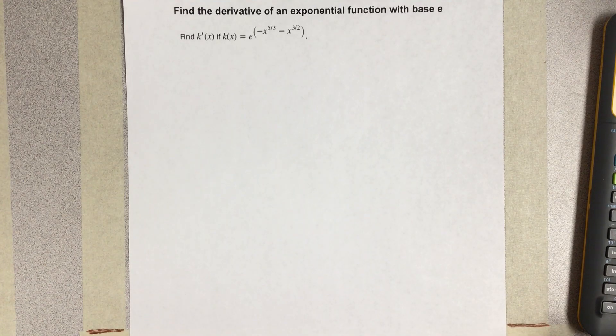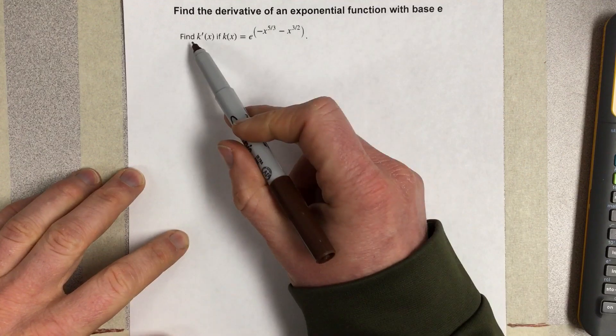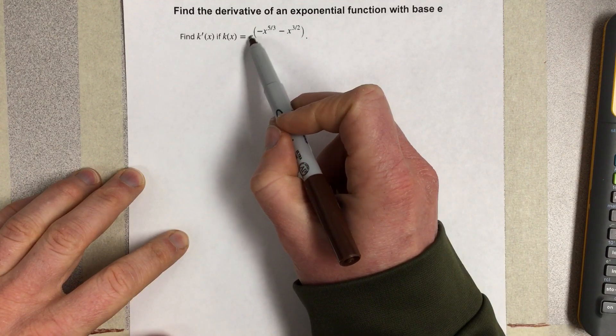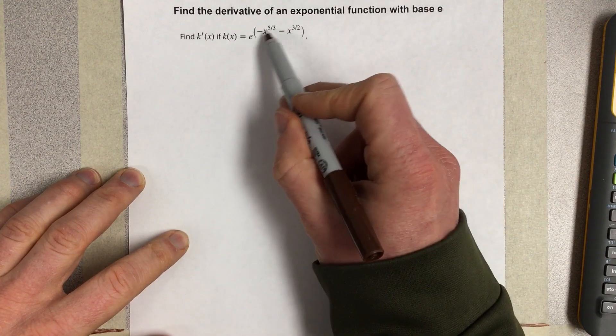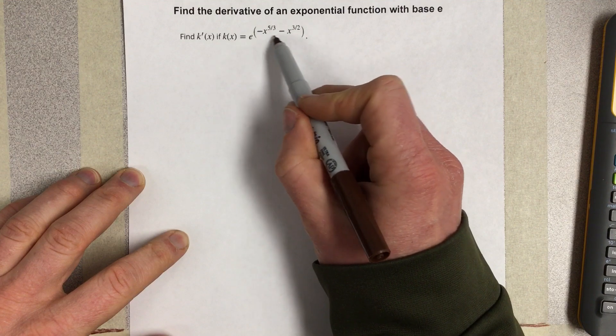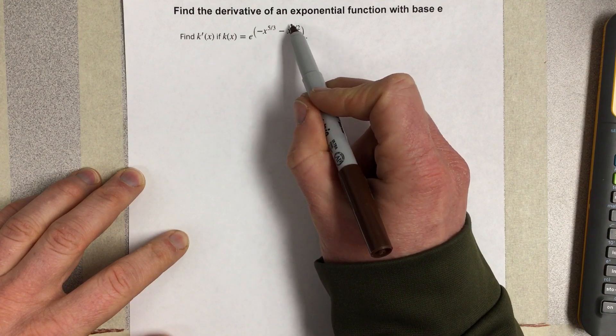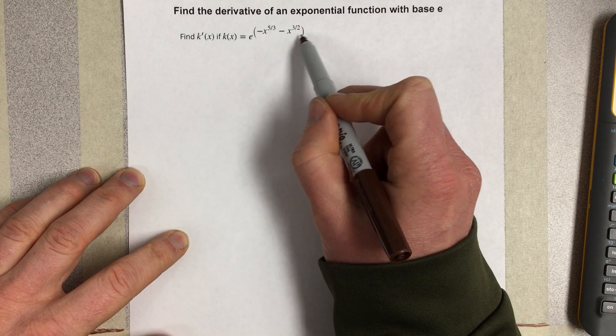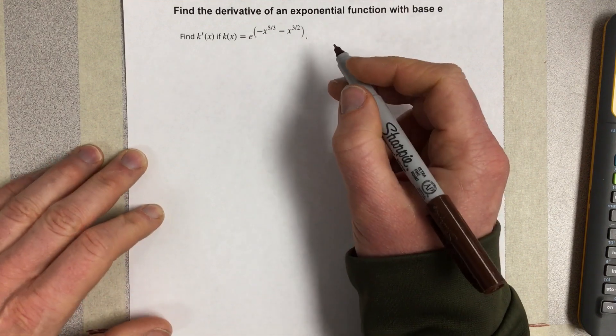In this video we're going to find the derivative of an exponential function with base e. You'll see that we have an exponential function, base e, and its exponent is actually another function inside of this exponential function. So we're going to have to use chain rule here.